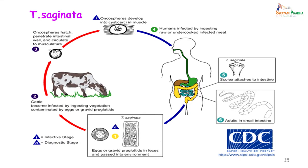The life cycle of Taenia saginata: oncospheres are present as cysticerci in the muscle of cattle. When man eats infected beef that has not been cooked properly, the larvae enter the stomach then reach the intestine where they develop into the adult worm. The adult worm attaches to the intestine with the help of suckers and derives its nutrition from the host. As segments mature, the gravid segments separate from the body and are passed out in the feces — either singly as proglottids or as eggs.